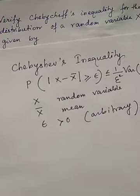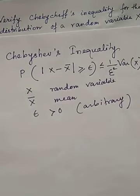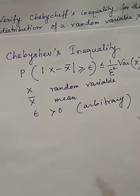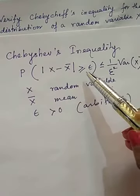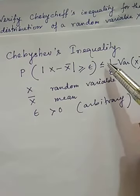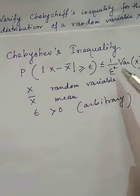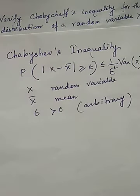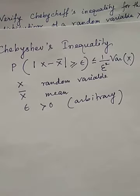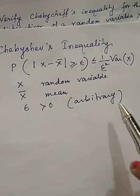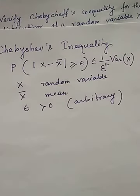Let us see what Chebyshev's inequality is. It states: probability of |x − x̄| ≥ ε ≤ (1/ε²) · Var(X), where capital X is the random variable, x̄ is the mean, and ε is an arbitrary number greater than 0.